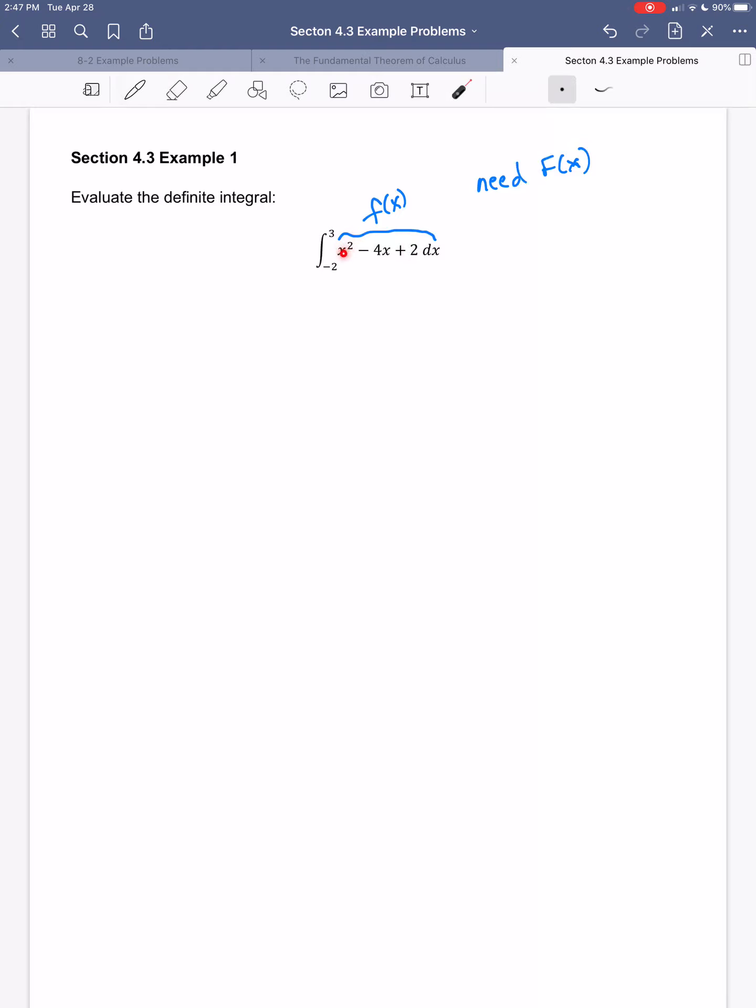When I take the antiderivative of x squared, that's a power rule. I know when I take the derivative, the power comes down in front and the power goes down 1. So to take the antiderivative, the power has to go up 1. And then we have to remember that if it's going up 1, then I need to divide by that new exponent. Because the idea then is if I would take the derivative, this 3 would come down in front and then the 3's would cancel, and I'd subtract 1 and get the x squared.